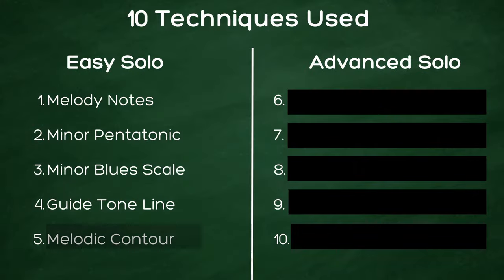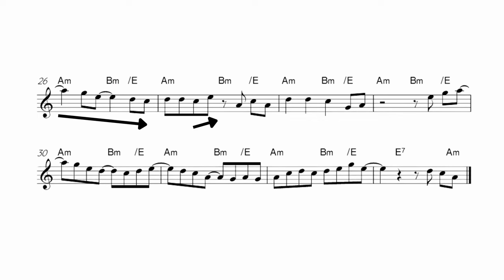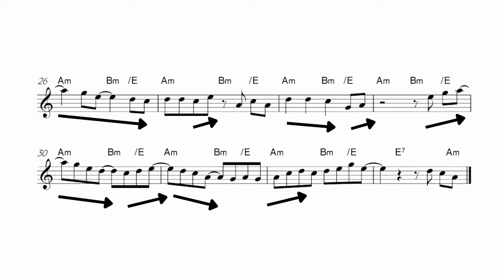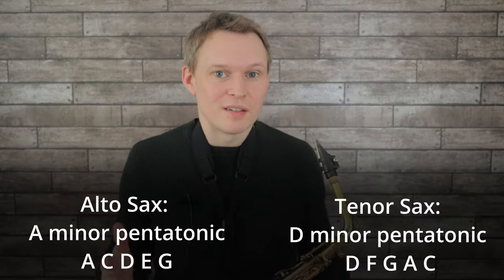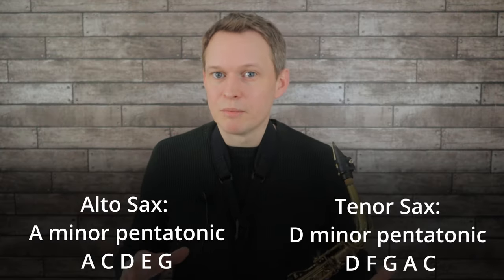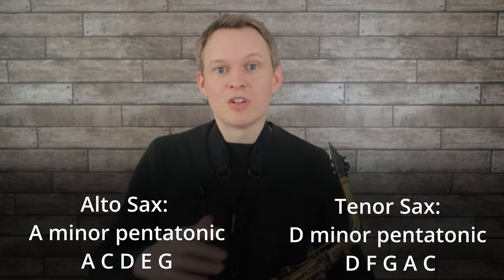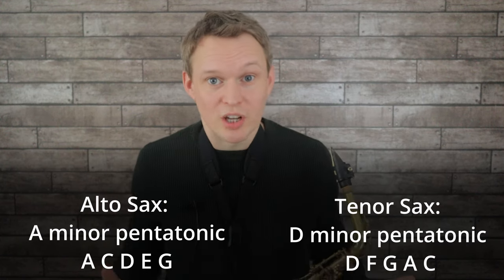To finish off this beginner solo we're going back to using the melody as our primary inspiration. What we're doing here is following what's called the melodic contour — following a similar shape to the original melody, but of course you can add in your own variations and mix it up a bit. For these phrases I was going back to just using the nice simple minor pentatonic scale, which can help free up your mental space and really focus on the shape of the phrase, the contour of the line you're playing.